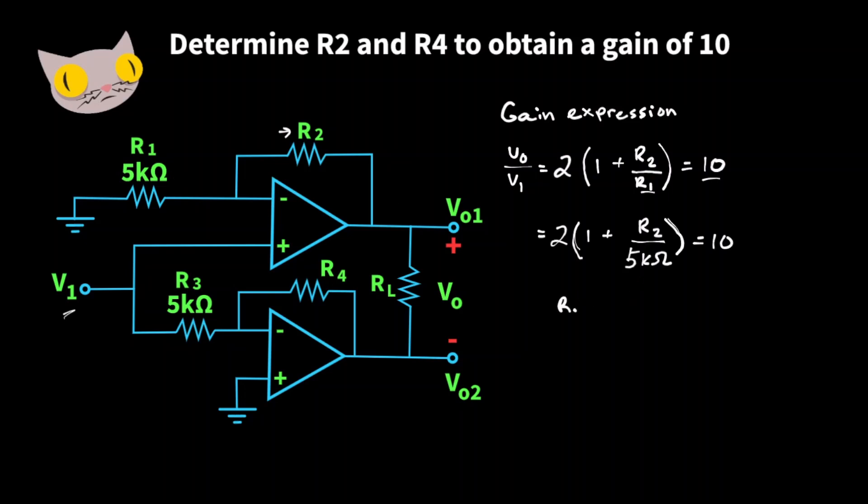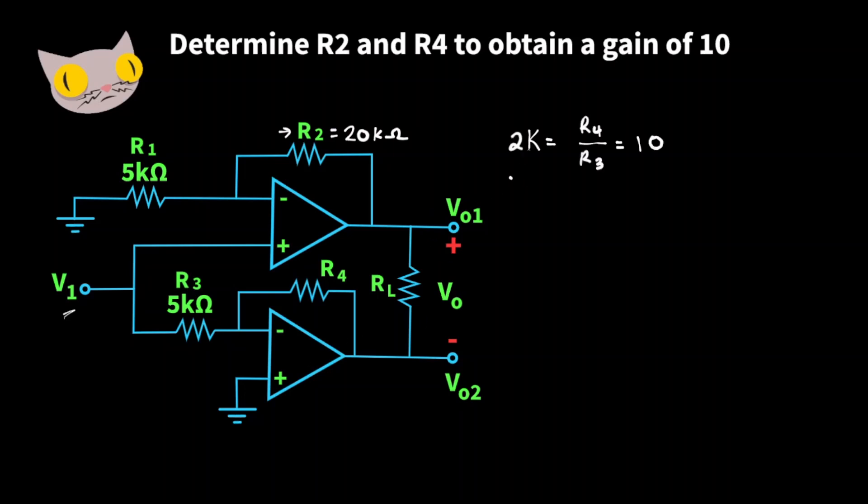And that's going to give us 20k ohms. So now the bottom amplifier is connected as an inverting amplifier, whose gain is going to be equal in magnitude, and that'll be given by 2K is equal to R4 over R3 is equal to 10. Which we can then write as K is equal to R4 over R3 is equal to 5.